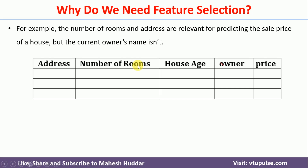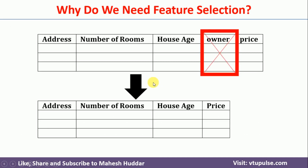The number of rooms also matters: fewer rooms means a lower price, and more rooms means a higher price. The age of the house matters too — a new house will have a higher price and an old house a lower price. However, when predicting the price, the owner column doesn't matter much. So we need to remove the owner feature and retain only the three relevant features: address, number of rooms, and house age. Once the owner is removed, the dataset contains only those three features and the price to predict.